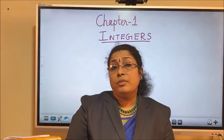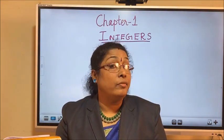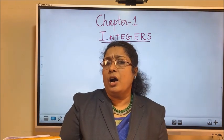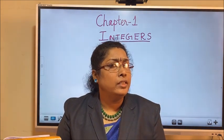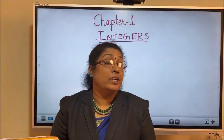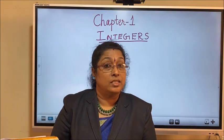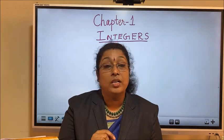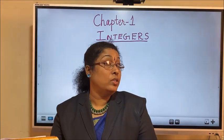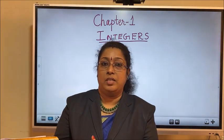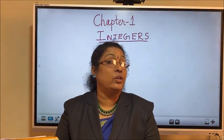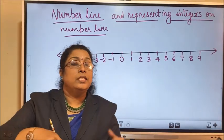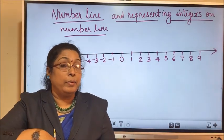Again, let us look at how we can represent integers on a number line. How should we draw a number line? We have studied this in Class 6. First we must draw a line, then mark 0. The right side of 0 has positive numbers, and the left side of 0 has negative numbers. Let us draw a number line. This is how we draw a number line.